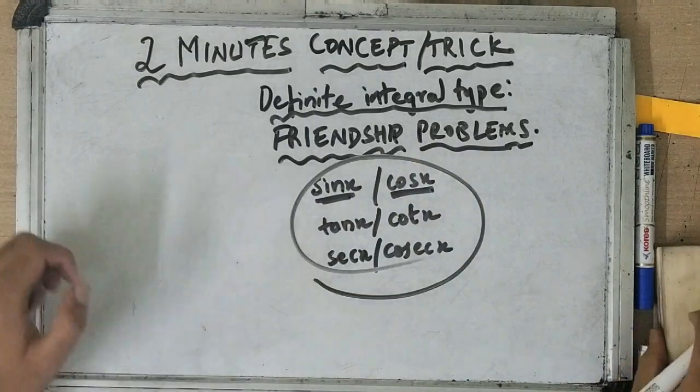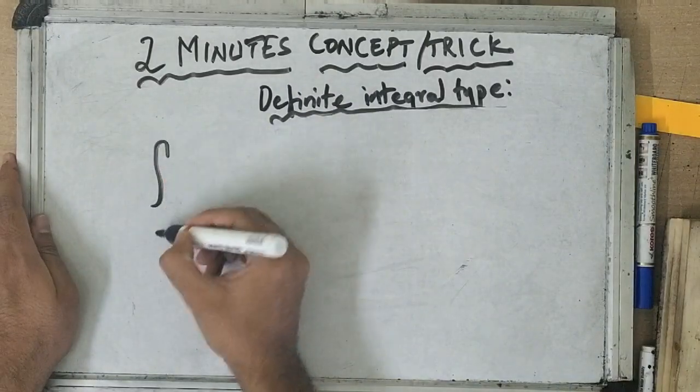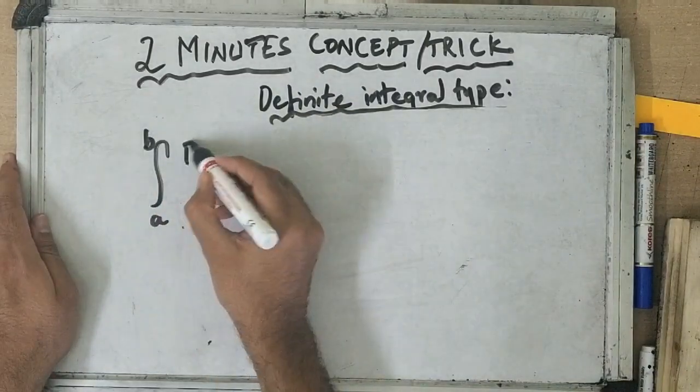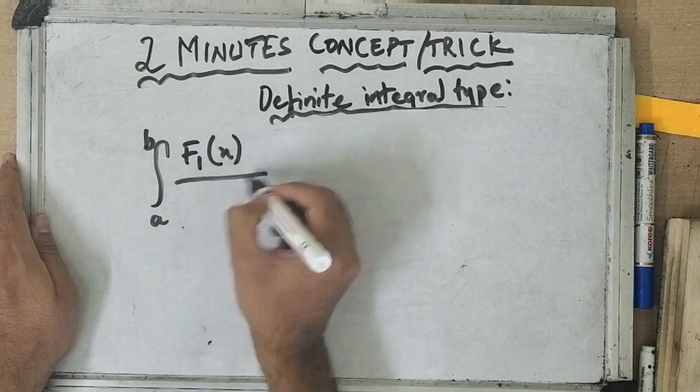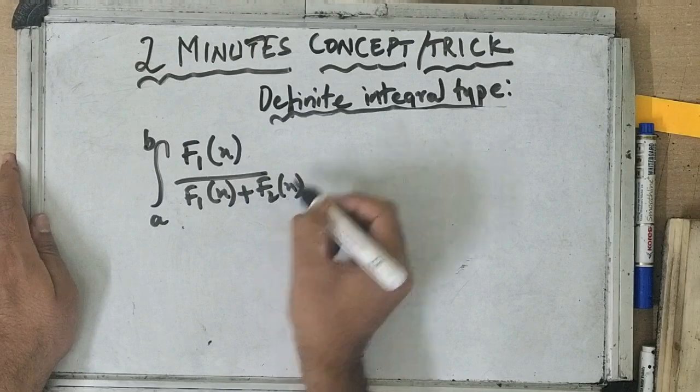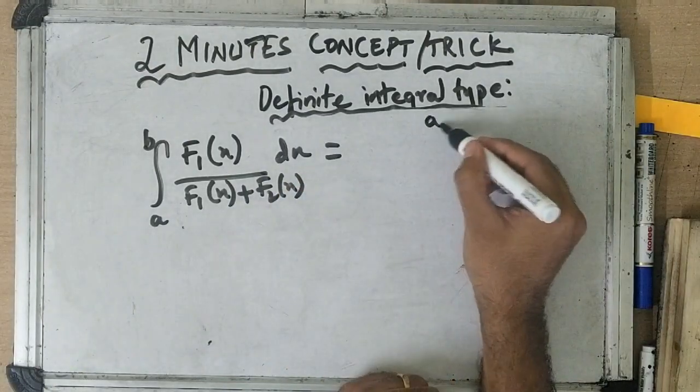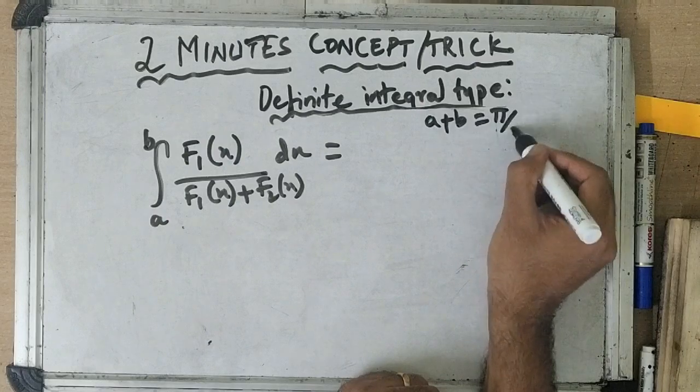So whenever we have something like a to b, the first friend as a combination of first friend and second friend dx, provided a plus b is pi by 2.